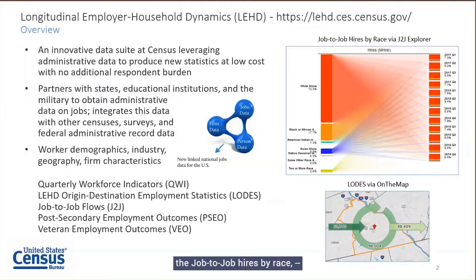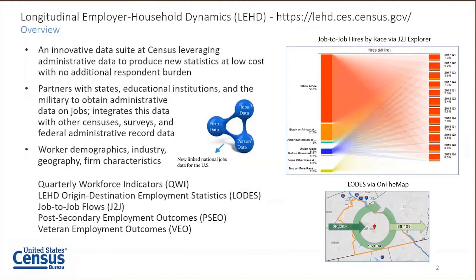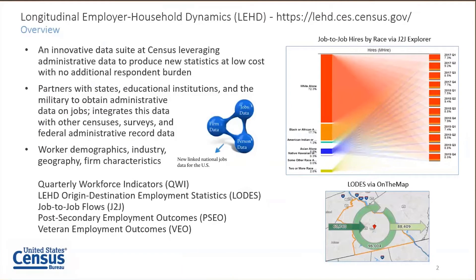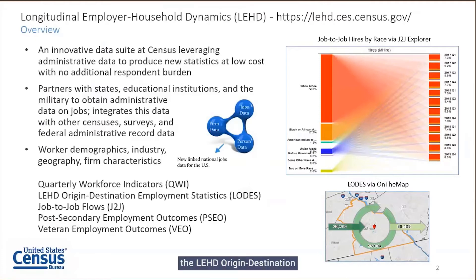We can look at job-to-job hires data by race, and another graphic looks at where individuals live versus where they work. We use administrative data and produce partially synthetic data on residents' information to determine estimates of inflows and outflows of particular geographies. There are five core products in the LEHD program: the Quarterly Workforce Indicators, the LEHD Origin Destination Employment Statistics or LODES, which is where the synthetic data comes in on residents versus workplace.